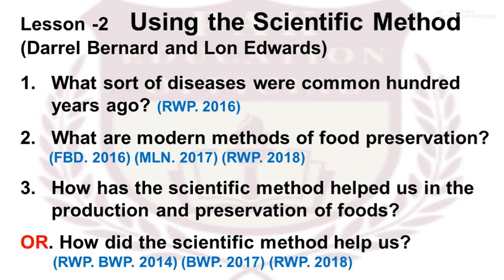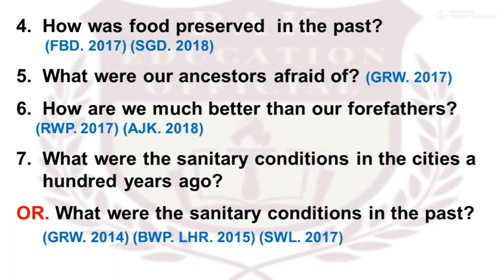What sort of diseases were common 100 years ago? What are modern methods of food preservation? How has the scientific method helped us in the production and preservation of foods? How did the scientific method help us? How was food preserved in the past?